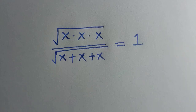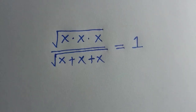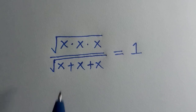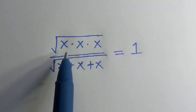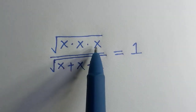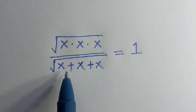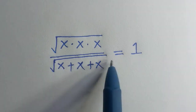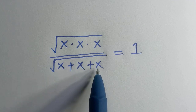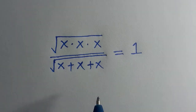Good day viewers, you are welcome. How to solve this algebraic equation in a radical form. We have square root of x multiplied by x multiplied by x, divided by square root of x plus x plus x, equals 1.